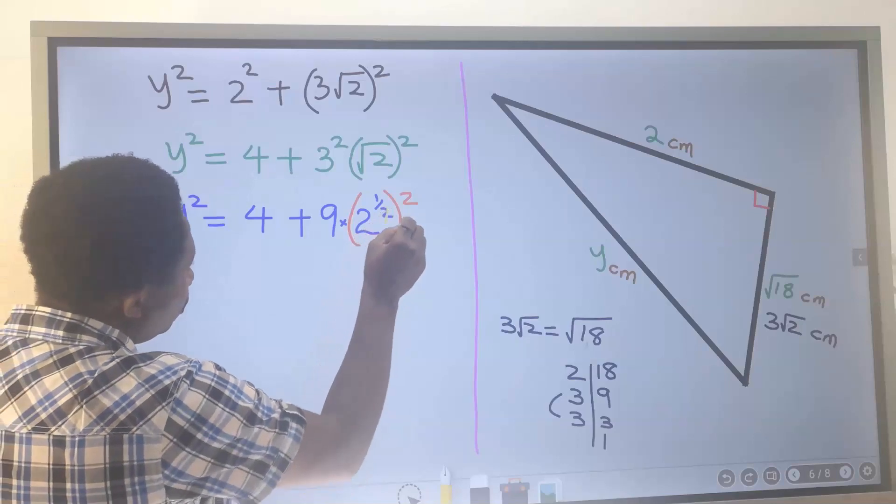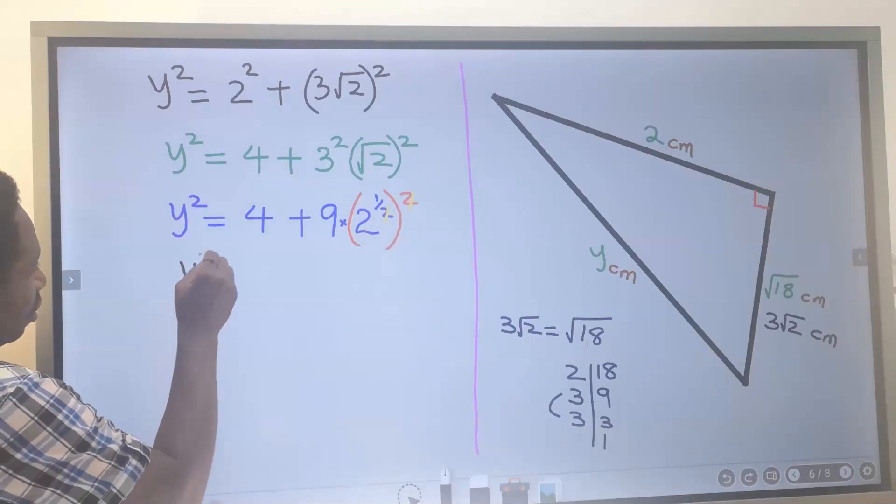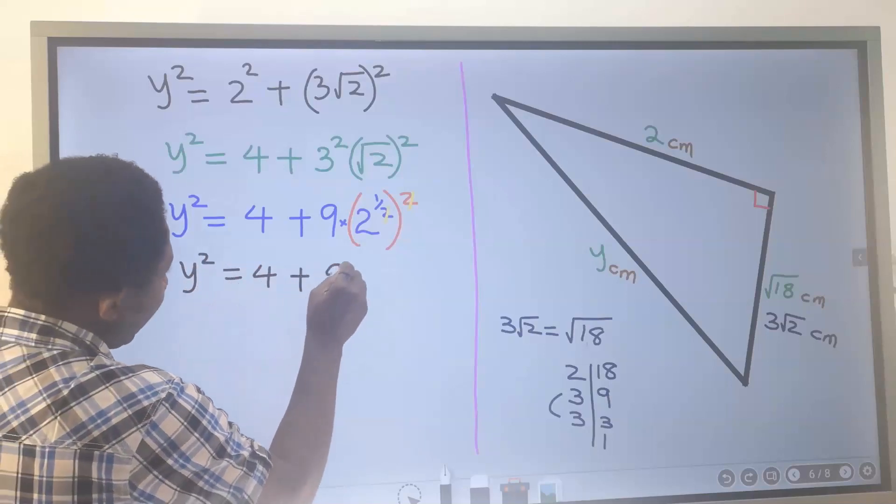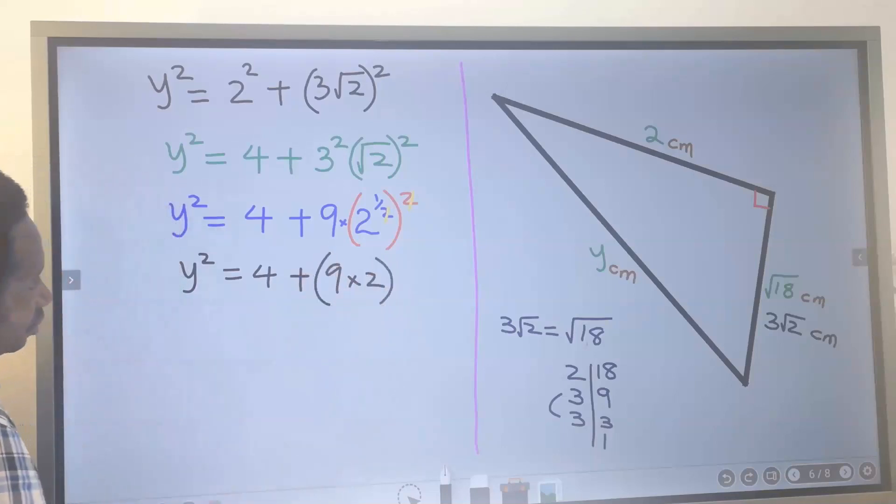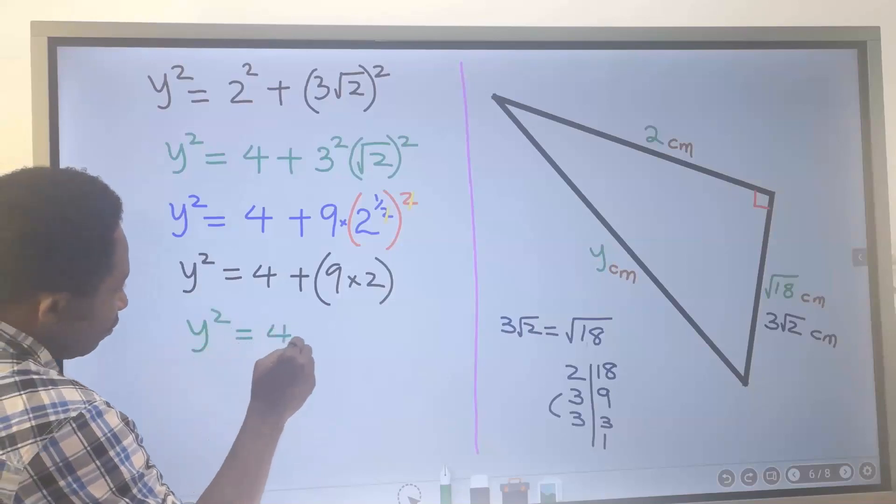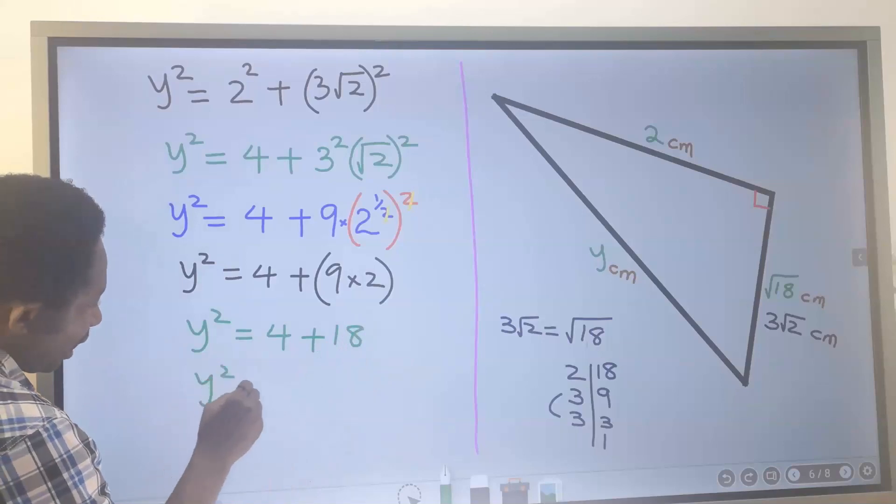y² is 4 plus 9 times 2. This 9 will multiply this 2 and we have y² is 4 plus 18. y² is 4 plus 18, which gives you 22.